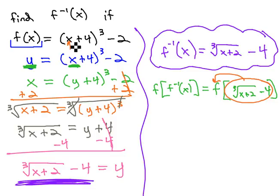replacing x with all of that, we get the cube root of x plus 2 minus 4 plus 4 cubed minus 2. That's the same original function. I've just replaced the x with the inverse.